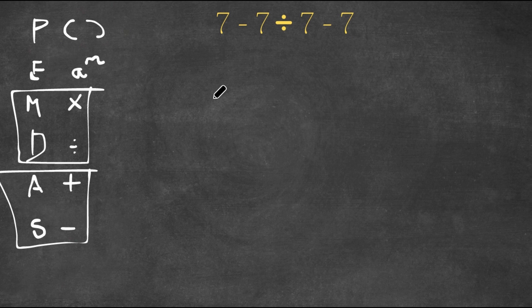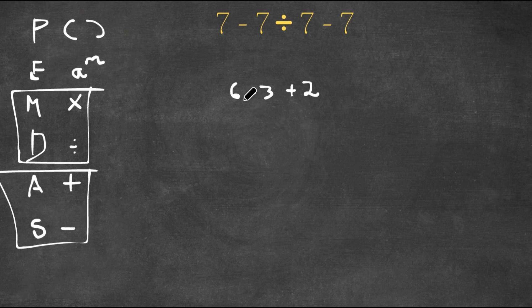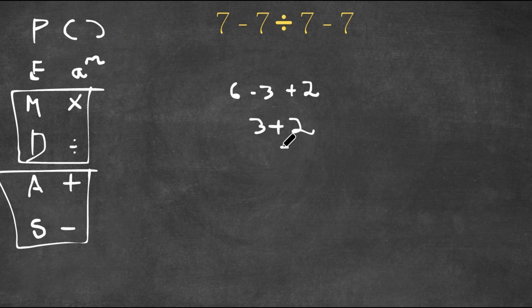For example, if I had 6 minus 3 plus 2, because subtraction comes first here when going from left to right, I would do subtraction first. So 6 minus 3 is 3, then 3 plus 2 is 5.